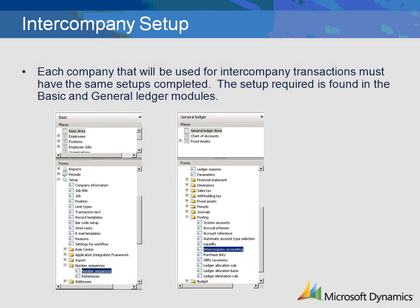Each company that will be used for intercompany transactions must have the same setups completed. The setup required is found in the Basic and General Ledger modules. In the Basic module setup, a number sequence to be used for intercompany transactions must be set up. In the General Ledger module, create a journal name for the intercompany transactions, set up a ledger account or accounts to be used for posting, set up intercompany accounting, and finally verify that each company has the same currencies defined.